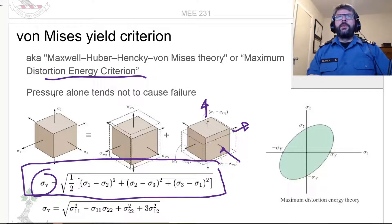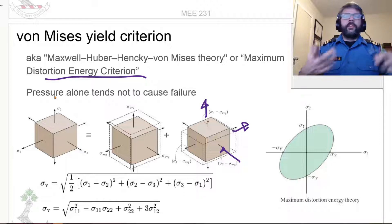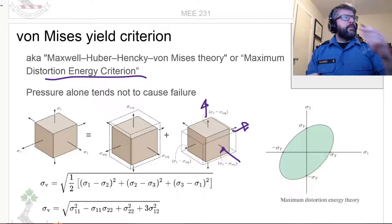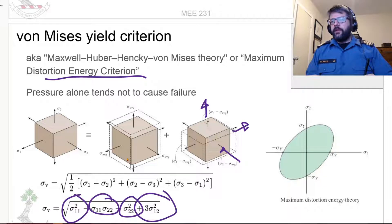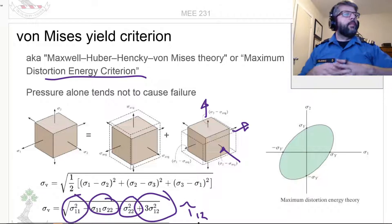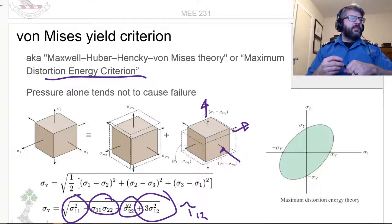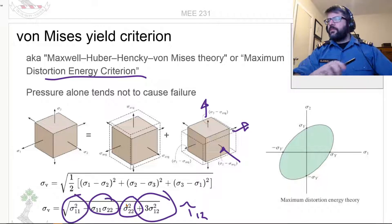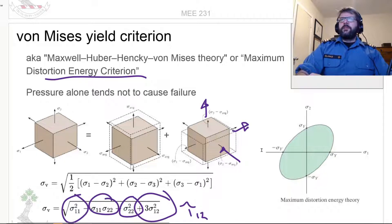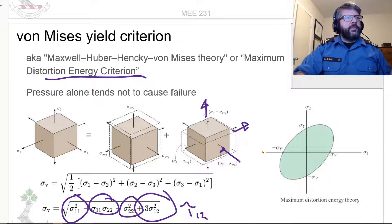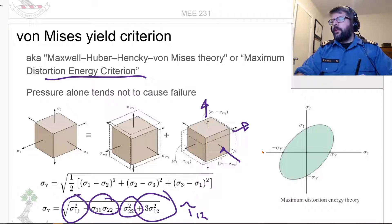If you haven't done that transformation but you're in a plane stress state, then the formula uses sigma_11, sigma_22, and the shear tau_12. In a plane stress state, this ends up giving us a characteristic shape — I'll draw on here what the Tresca theory had for comparison. You'll notice that the envelope for the Von Mises yield criterion is a bit bigger than what we saw for Tresca. So Tresca is going to be inherently more conservative than Von Mises.